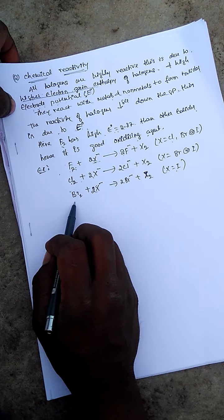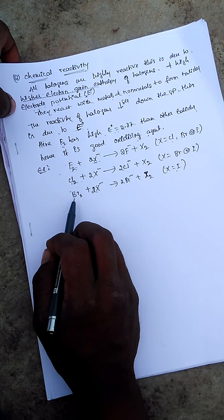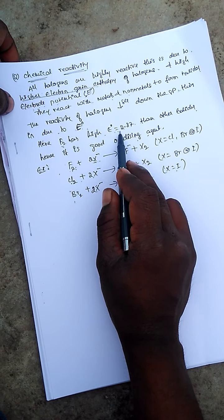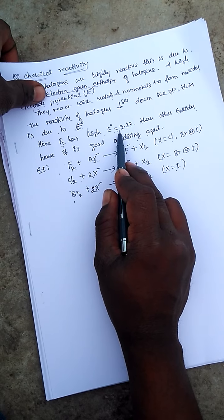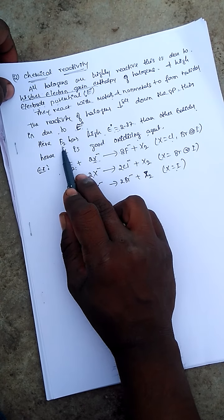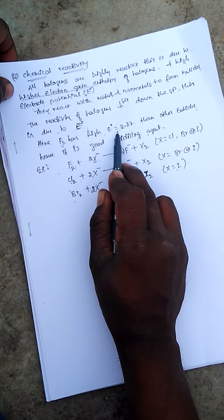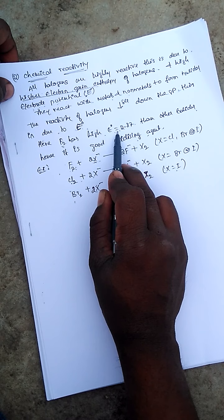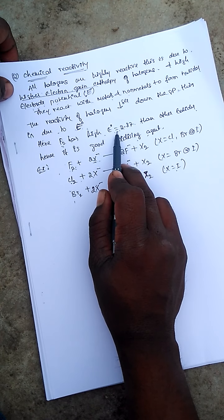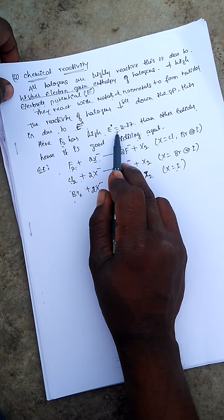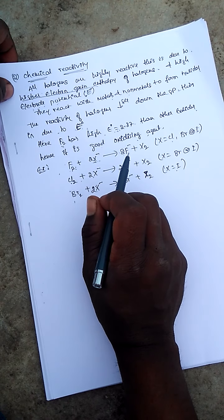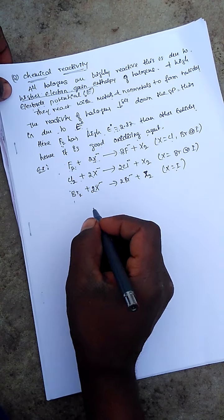These elements behave as oxidizing agents based on their electrode potential E0. Chlorine has high electrode potential, therefore it has good oxidizing agent property.